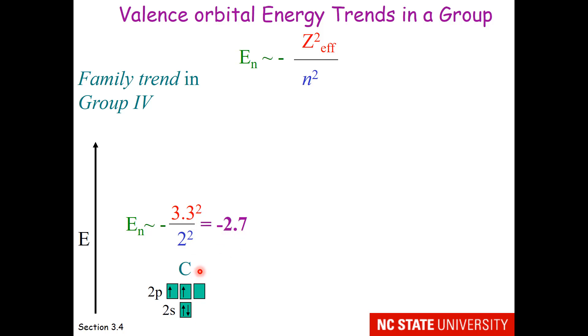Well, what if we go to the next element down, which would be silicon? n will increase, but so will z-effective. Well, it turns out that the n value increases faster. So the valence orbitals of the 3s and 3p are further away from the nucleus than for carbon. They are less negative.